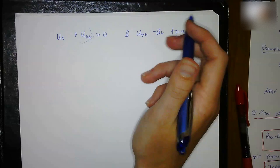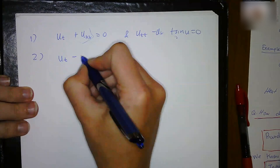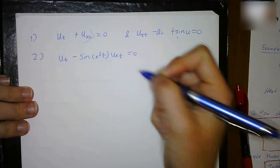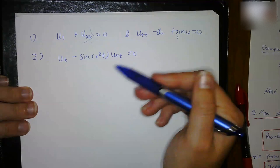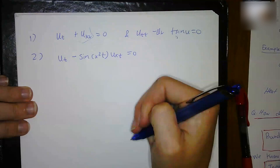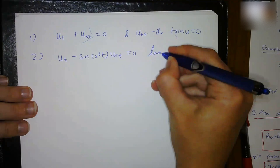For a second example, we could have u_t minus sin(x²t)·u_xt equals 0. Every term contains u_t or some derivative, so we can say that's linear, and it's homogeneous because it equals 0. So this is linear, homogeneous.